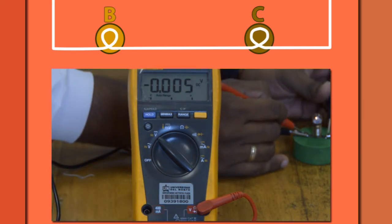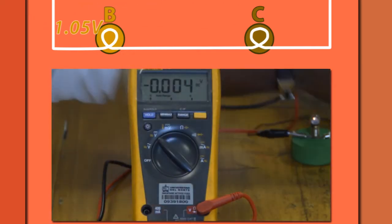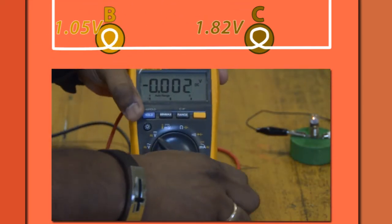Con el multímetro se mide la corriente eléctrica y la diferencia de potencia para cada bombillo y también para los dos simultáneamente.